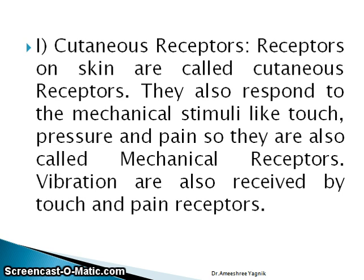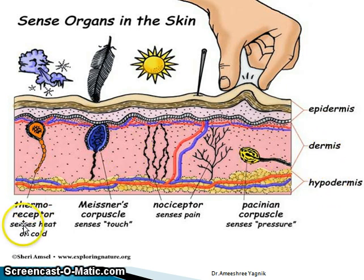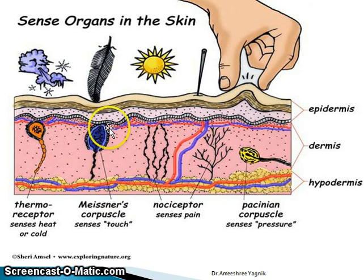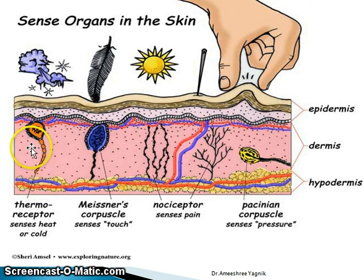Cutaneous receptors are receptors on the skin. They respond to mechanical stimuli like touch, pressure, and pain, and are also called mechanoreceptors. Vibrations are received by touch and pain receptors. In the dermis layer of the skin — which has three layers: epidermis, dermis, and hypodermis — thermoreceptors sense heat or cold; Meissner's corpuscle senses touch; nociceptors sense pain; and Pacinian corpuscle senses pressure.